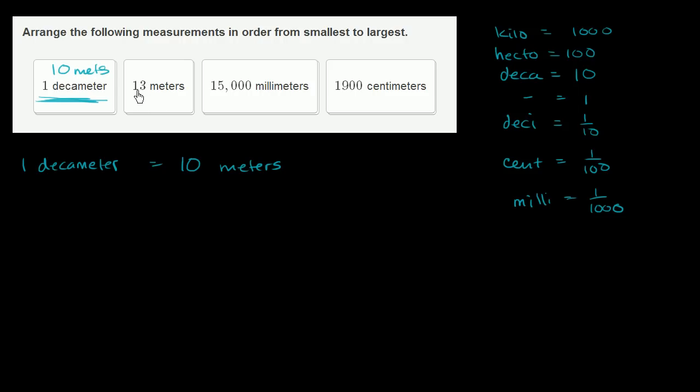This is already in meters—13 meters. Then we have 15,000 millimeters. Milli means one-thousandth, so it's 15,000 times one-thousandth of a meter. Each millimeter is one-thousandth of a meter. So 15,000 divided by 1,000 gives me 15 meters.